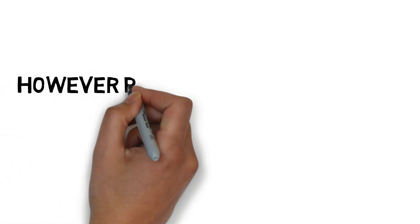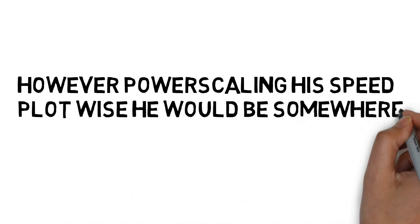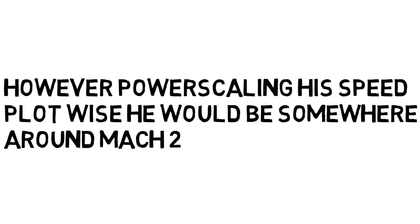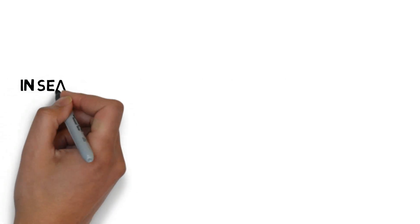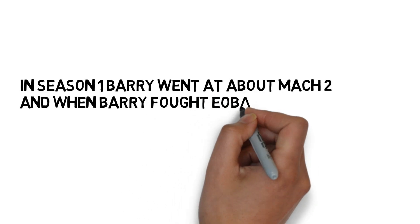However, the show has many inconsistencies, and if I power scale the speed plot-wise, he would be somewhere around Mach 2. This is because in Season 1, Barry went about Mach 2, which was his max speed, and when Barry fought Eobard, he was still losing.